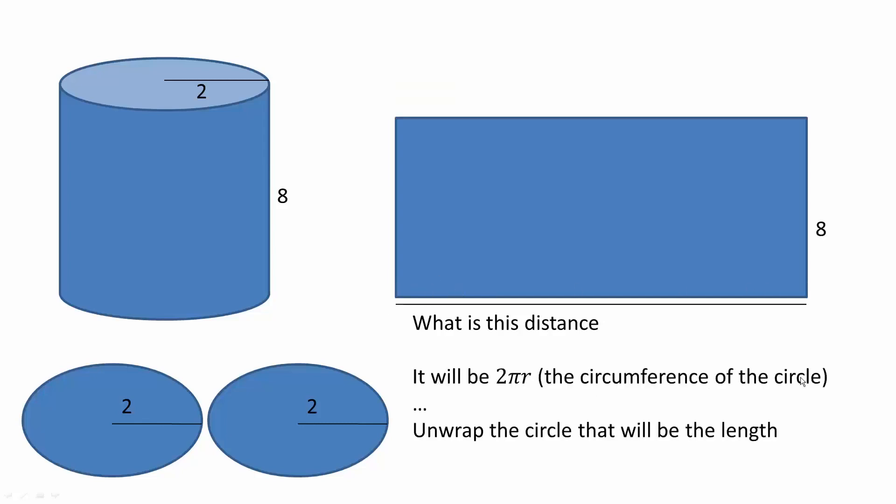This distance will be 2πr, the circumference of a circle. If you were to measure the circumference of this circle right here, it would be equal to this distance right here. That's important to note.